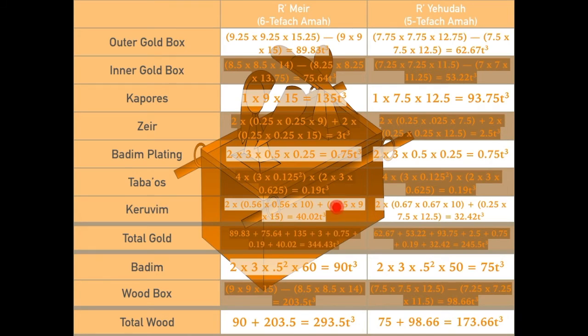The rings to hold the poles for the Aron were located on each corner of the Aron. The volume of a donut, the yummiest shape in math, is 3 times pi, the yummiest number in math, times the square of the minor radius, which is halfway across the circle cross-section, times the major radius, which is the distance from the center of the donut to the center of the circle cross-section. Thus, according to Rabbi Meir, the volume of all four tefachim combined is 0.19 cubic tefachim, and according to Rabbi Yehuda, the volume is exactly the same. For once, Rabbi Meir and Rabbi Yehuda agree on how big something is.